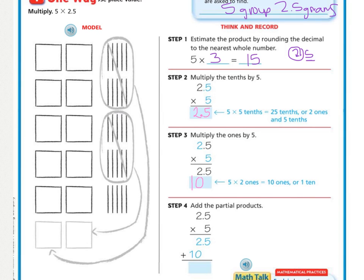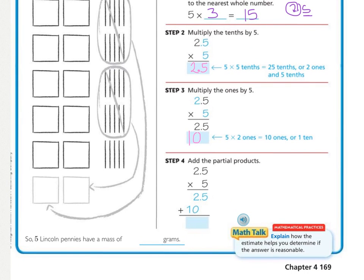And next is to add them all together. So, we're adding our partial products. And if we add 5 and nothing, bring down our decimal. 2 and 0 is 2 and the 1. So, 5 Lincoln pennies have the total mass of 12 and 5 tenths grams.